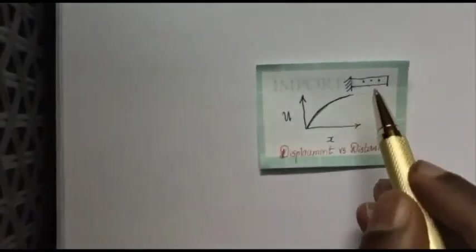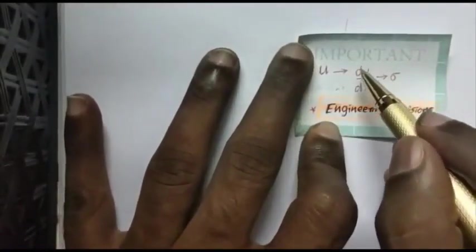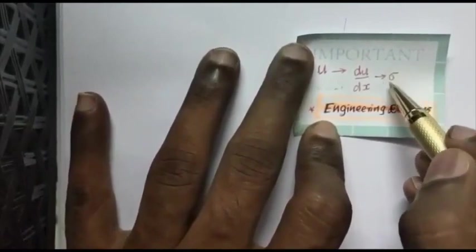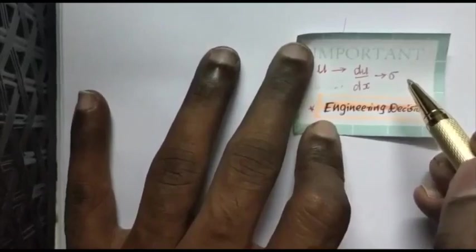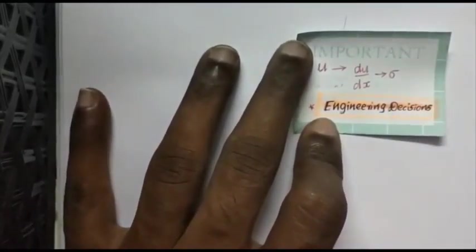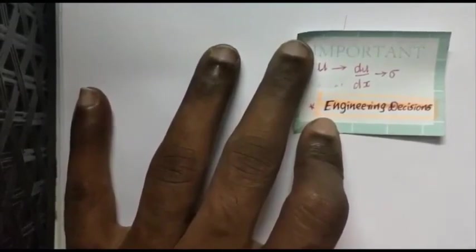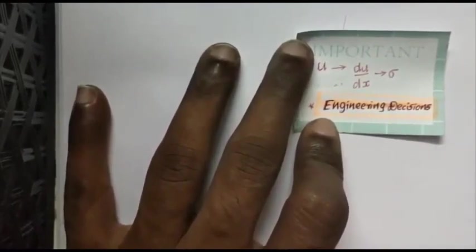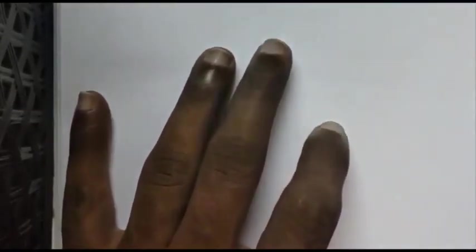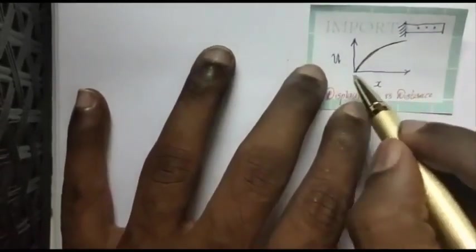You can extract the displacement at any position in the bar. Once you know the value of displacement, you can find the strain du/dx. If you know the value of strain, you can simply multiply it by Young's modulus and you can find the value of stress sigma. If you know the value of stress, you can take smart engineering decisions — you can tell whether the material will withstand a given load and whether the stress is within a permissible limit.